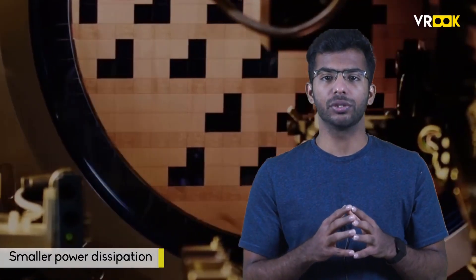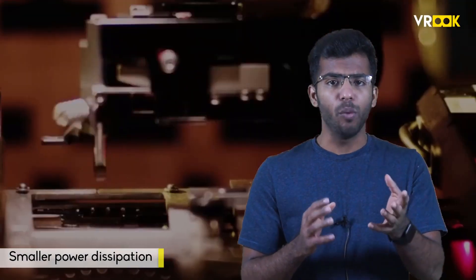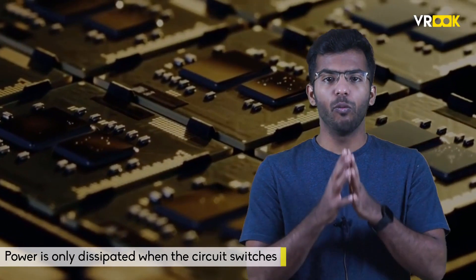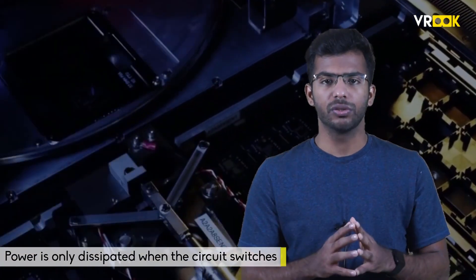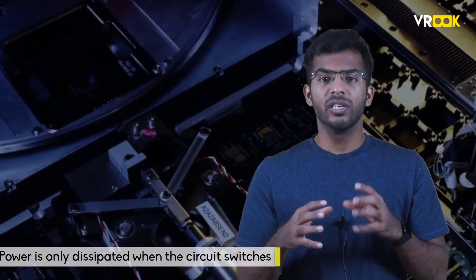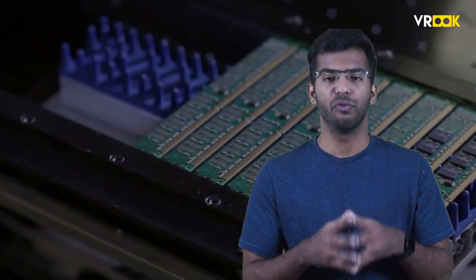The main advantages of CMOS over NMOS and bipolar technologies is the much smaller power dissipation. Unlike NMOS or bipolar circuits, a complementary MOS circuit has no static power dissipation. The power is only dissipated when the circuit switches. This allows CMOS integrating more CMOS gates on an IC than through NMOS or bipolar technology, resulting in much better performance.